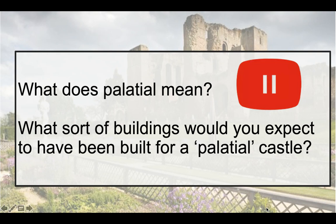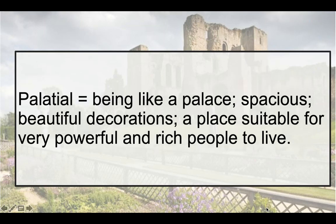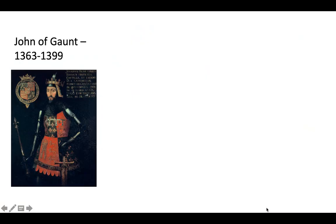Let's look at what palatial means. Something that is like a palace — something that's spacious, with beautiful decorations, a place suitable for the very powerful and rich to live in. The building developments and physical features we're going to look at in this video can all be described as palatial. We're going to look specifically at work done by John of Gaunt, the rich and powerful nobleman, then King Henry V, and finally Robert Dudley and the work he did to try and impress Elizabeth I.